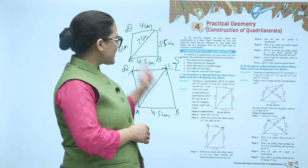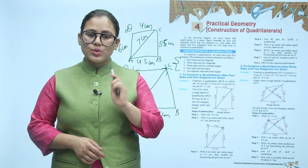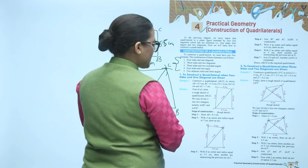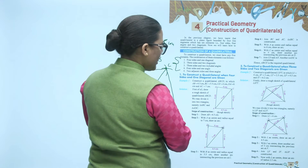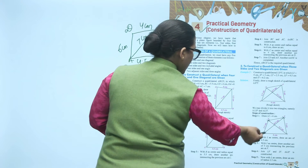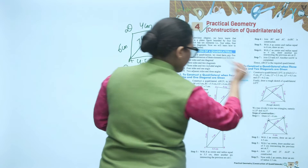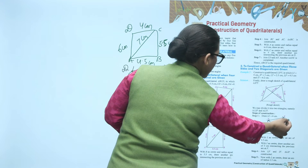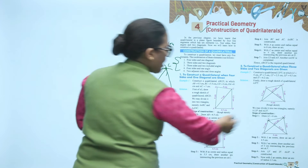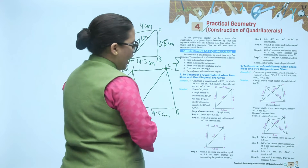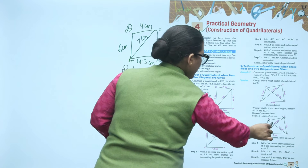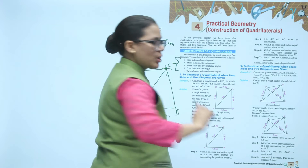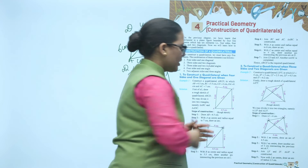Now instead of four sides and a diagonal, you have three sides and two diagonals. First draw a rough sketch. Draw a line of 4 cm, then take L as center and put an arc of 4.5 cm, then take I as center and put an arc of 3 cm. Then put another arc of 3 cm, take L as center and put an arc of 2.5 cm, then put an arc of 4.2 cm, and join the points to complete the quadrilateral.